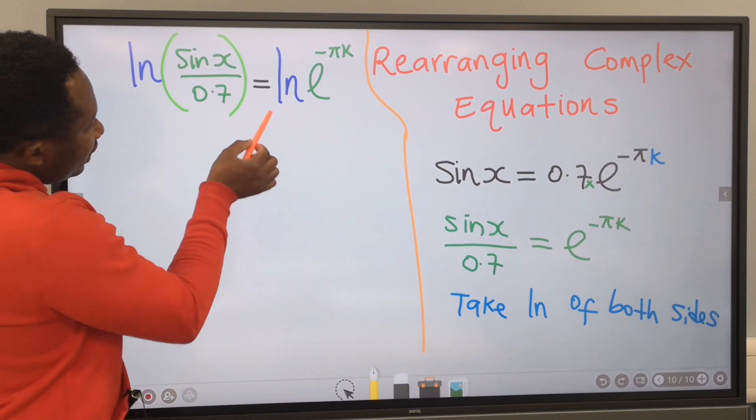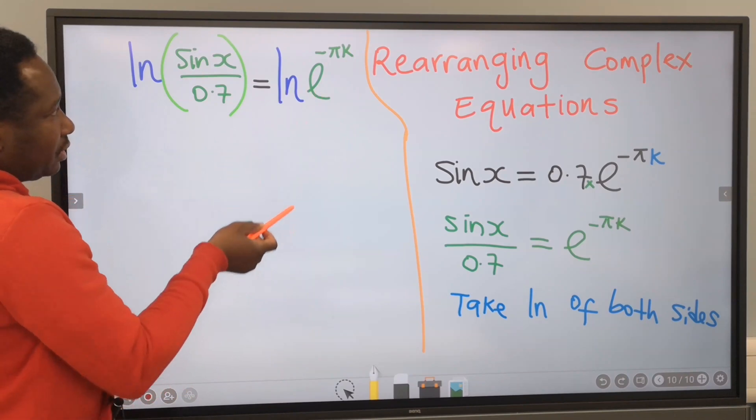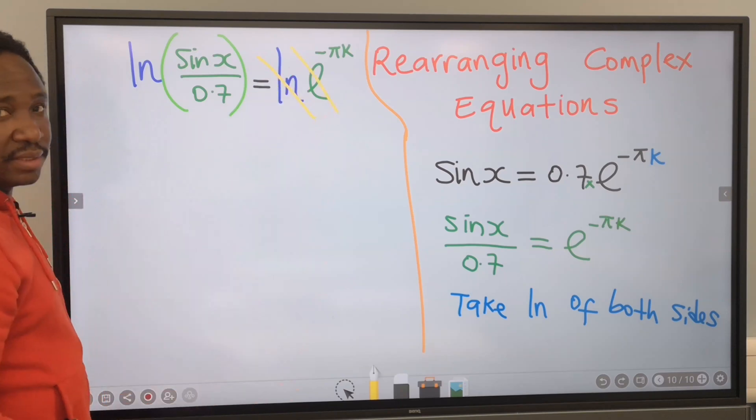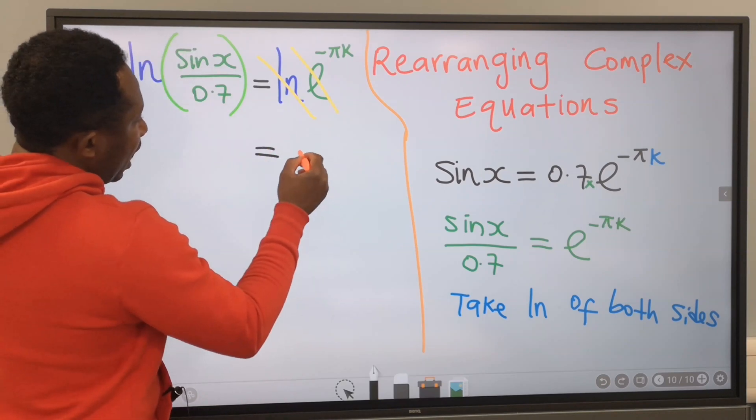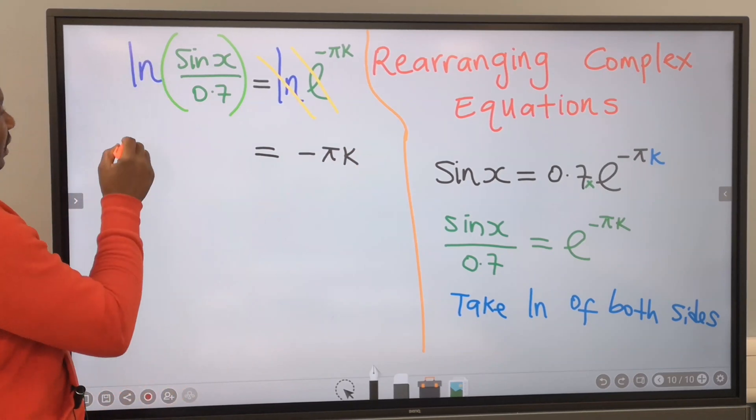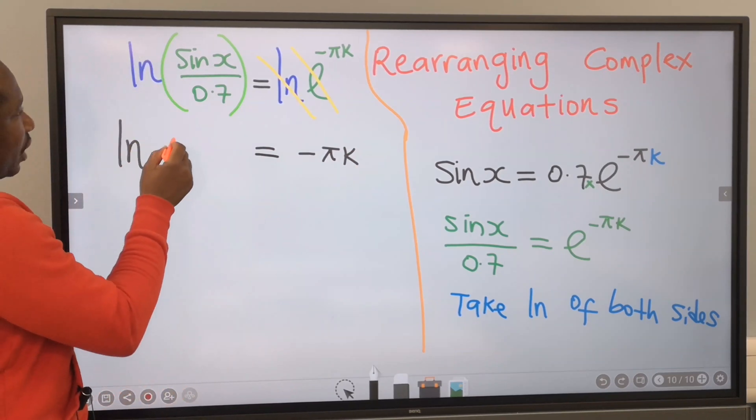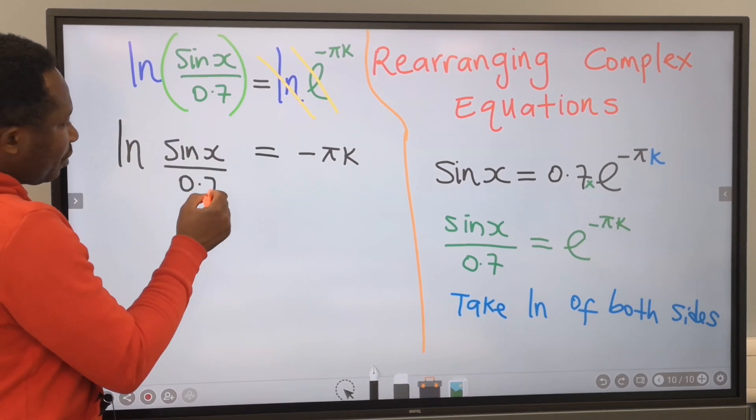Because this natural log is close to this exponential, they will neutralize each other according to the law of mathematics. Now, on this side, I'm left with minus pi k. And on this side, I have the natural log of sin x over 0.7.